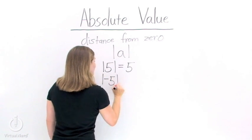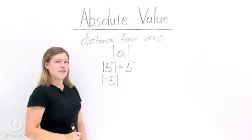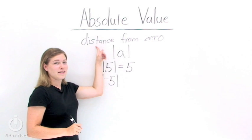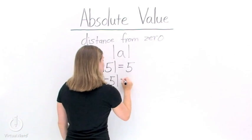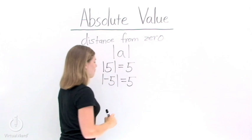What about negative 5? That's on the negative end of the number line, but we're talking about distance. So we want to know how far away it is. It's 5 units too, so the absolute value of negative 5 is 5.